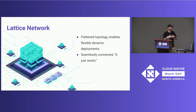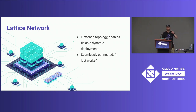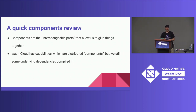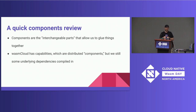The lattice is a distributed network connecting every single WasmCloud host application runtime — this is the part that actually makes it distributed. When you combine all this together, you get distributed capabilities. Now, to review what components are: components are these interchangeable parts I've been referring to — they allow us to glue different things together in the way we want. WasmCloud has capabilities which are these distributed components, but we'll still see there are underlying dependencies that can get compiled in.